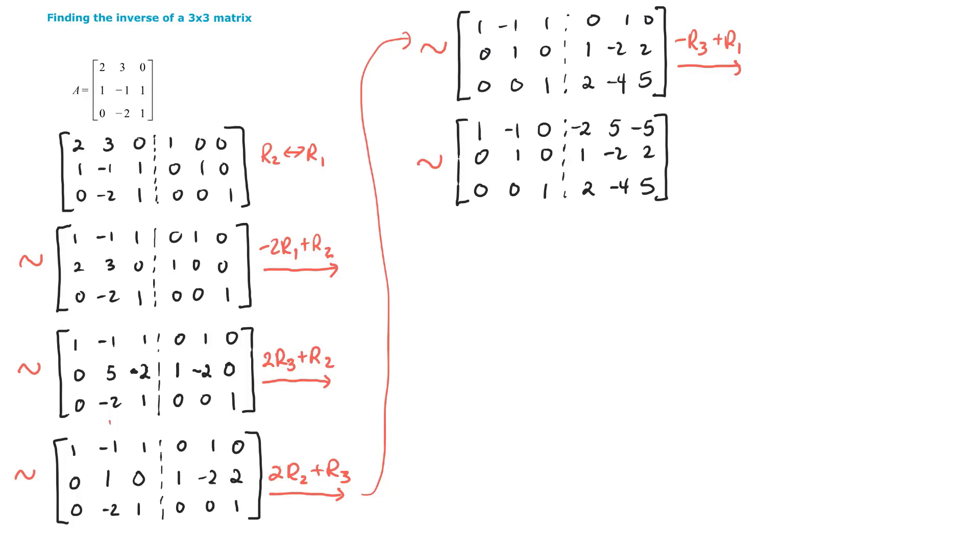One last step here. We're going to do row 2 added to row 1. So once again, we're storing in row 1. Only row 1 changes. Let's copy row 2 and row 3 again. And only row 1 changes. 1, 0, 0. And we've got 1 added to negative 2, negative 1. 3. And negative 3. Gorgeous.